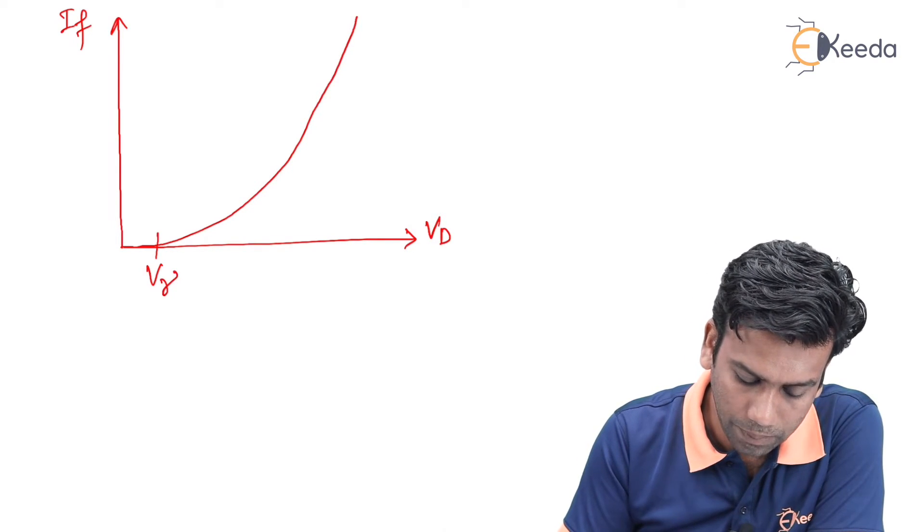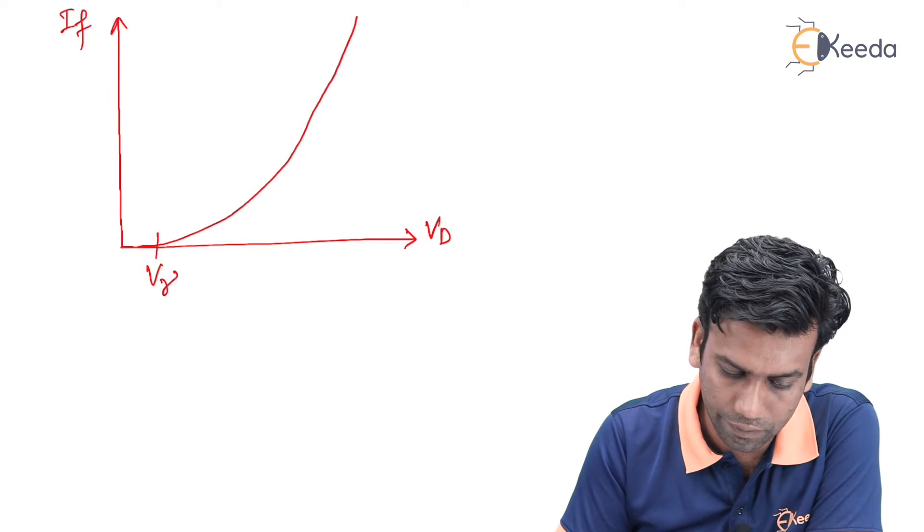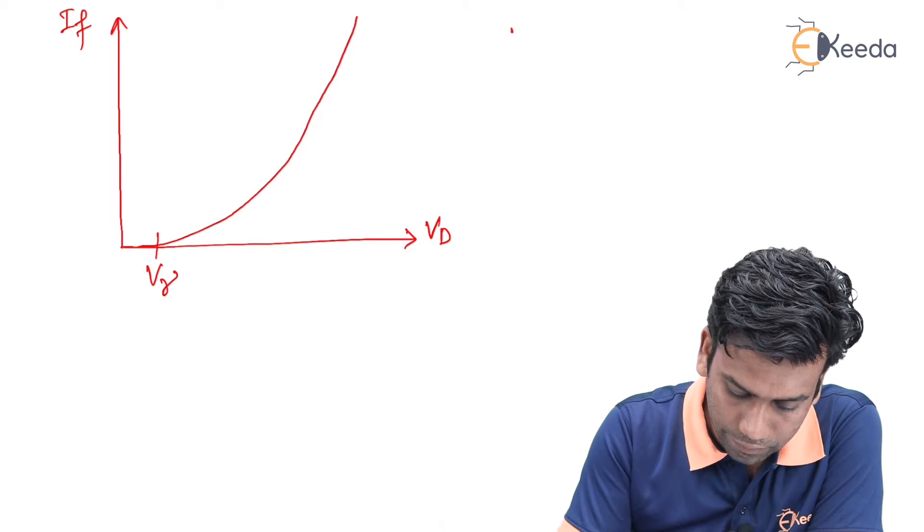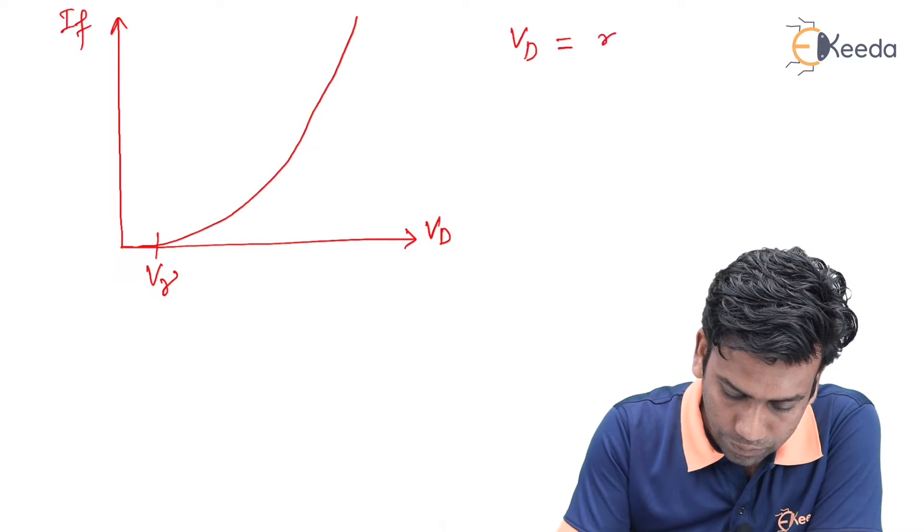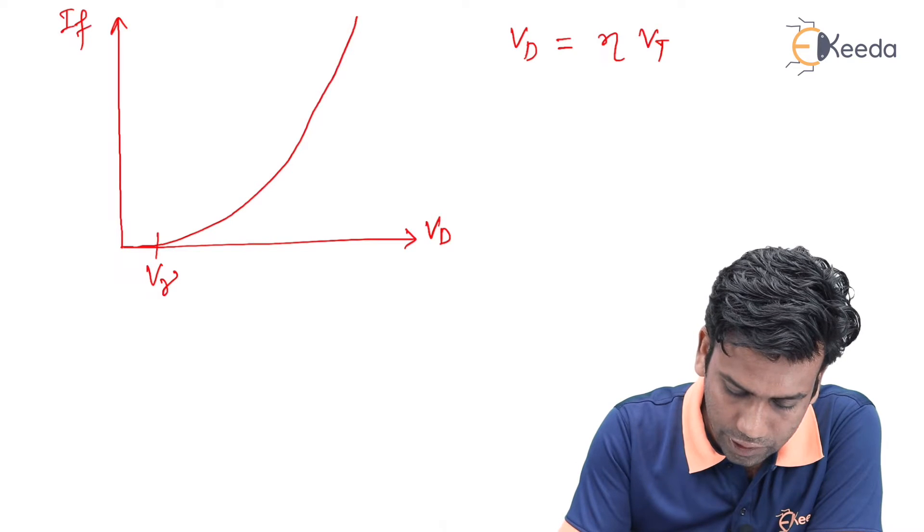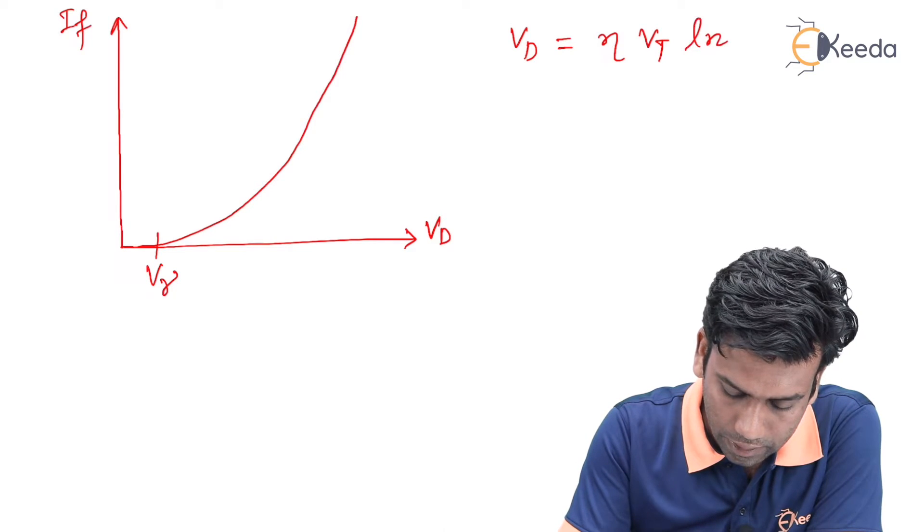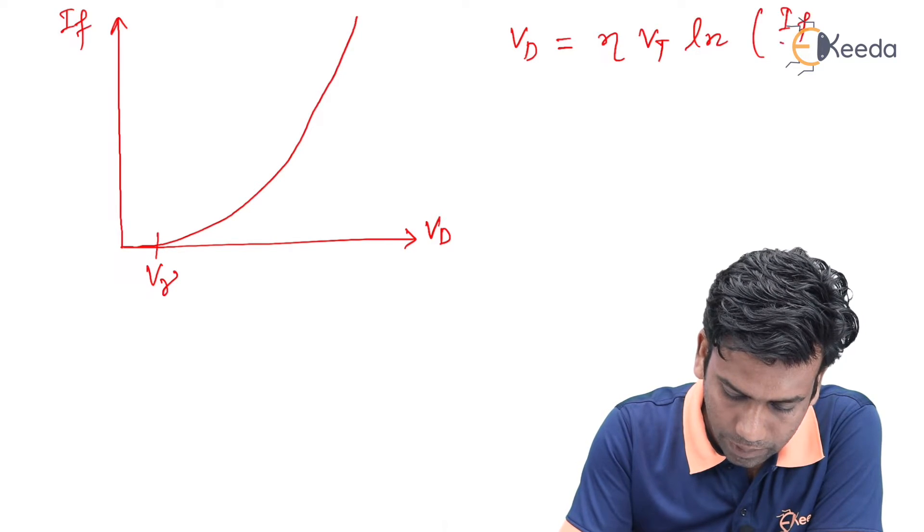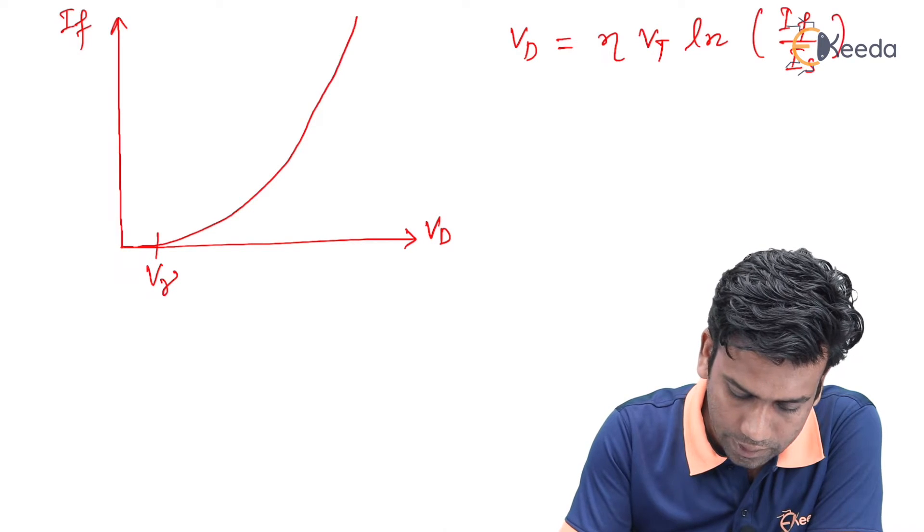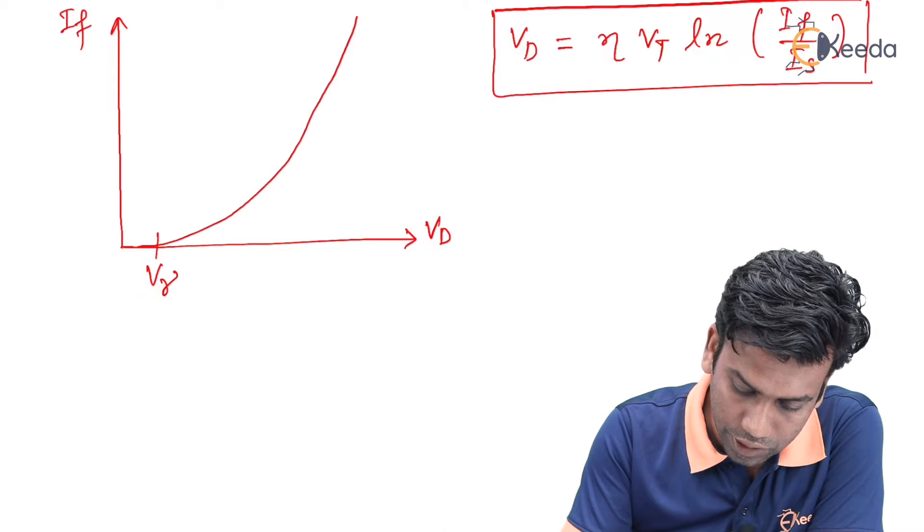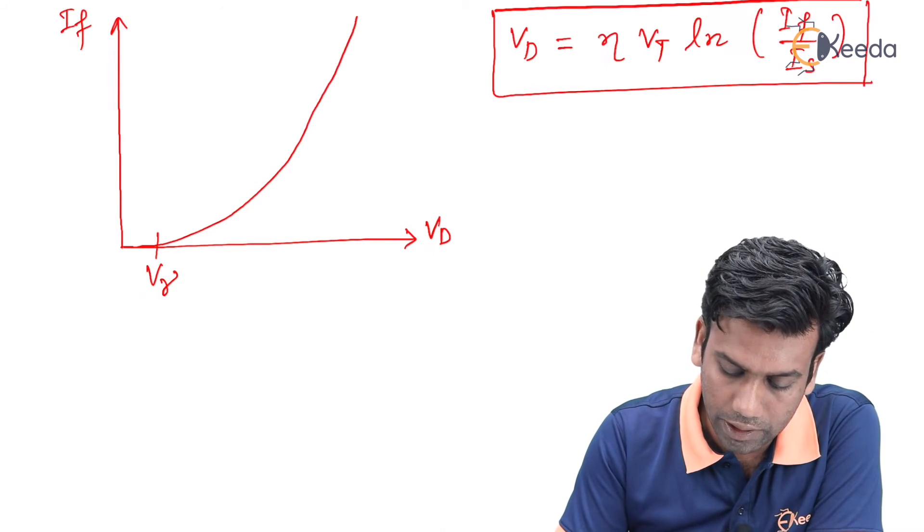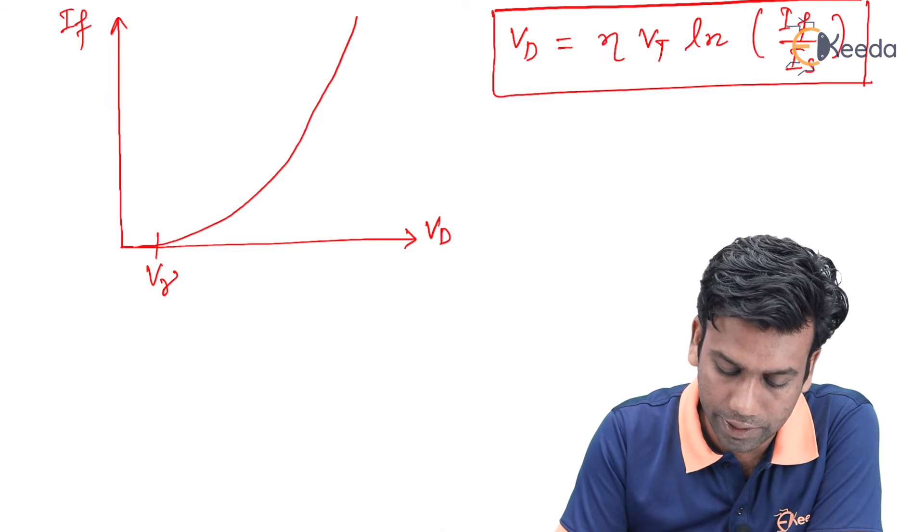From the previous equation of I_f, we can derive that V_D equals eta V_T ln of I_f by I_s. This is the forward voltage equation across the diode in terms of the forward current.